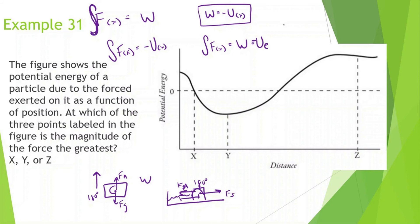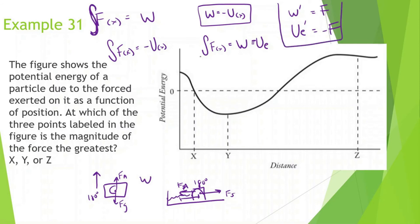The integral of force with respect to position gives us work, which equals negative potential energy. Conversely, if we find the derivative of work, it gives us force; and the derivative of potential energy gives us negative force. So: the integral of force over position equals work, work equals negative potential energy, the derivative of work gives force, and the derivative of potential energy gives negative force.